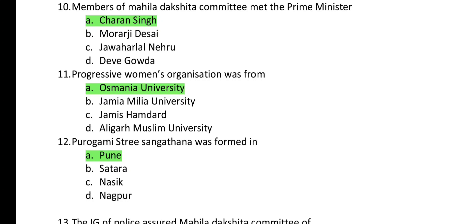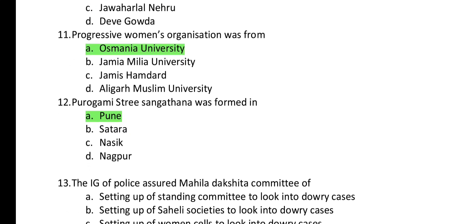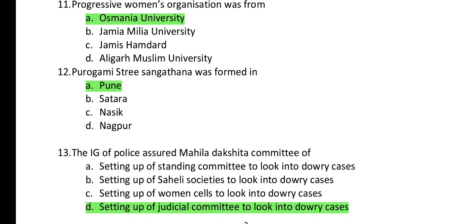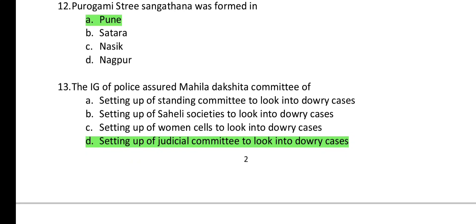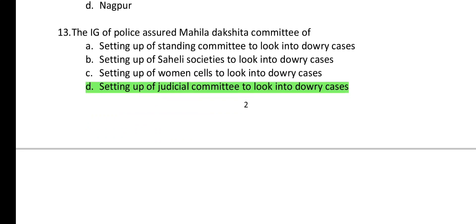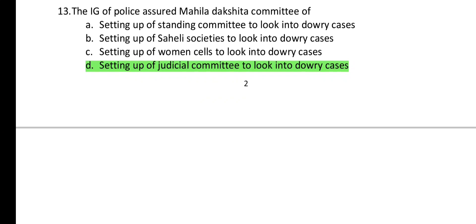Question 11: Progressive Women's Organization was from Osmania University, which is in Hyderabad. Question 12: Purugami's Three Sangathan was formed in Pune. Question 13: The IG of Police assured the Maila Dakchita Committee of the setting up of a Judicial Committee to look into dowry cases.